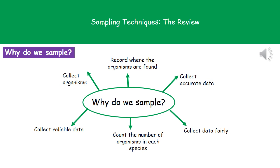Considering why we actually carry out sampling, there are several key ideas. From taking samples we can record where organisms are found, collect fair, accurate, and reliable data, collect the organisms themselves so we can identify them at a later stage, and determine the number of organisms present in each species.